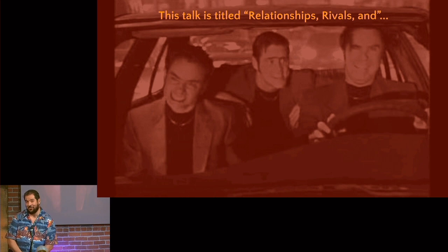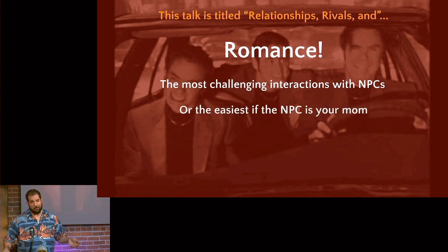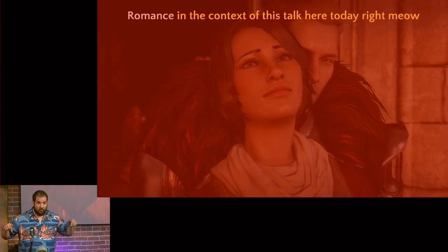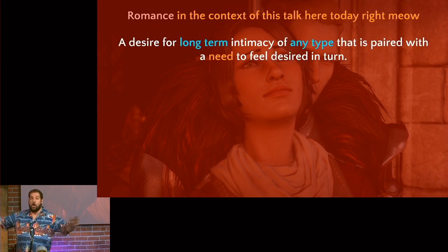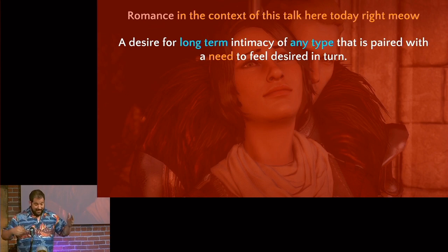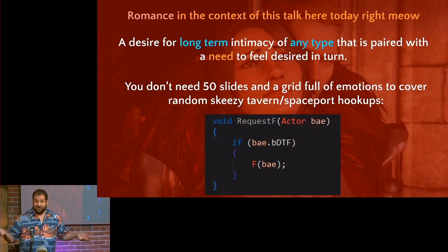But this talk is titled Relationships, Rivals, and Romance — so there's a whole other aspect. This is perhaps the most challenging interaction with NPCs. We have to define romance in terms of gameplay. What is love? In the context of this talk, my definition: a desire for long-term intimacy of any type that is paired with a need to feel desired in return. Long-term intimacy is important to me. I know there's a trend in games where any organism can be with any organism — that's easy, you don't need to track love for that. I believe you should require players to opt in: a checkbox — do you want romance in your game?